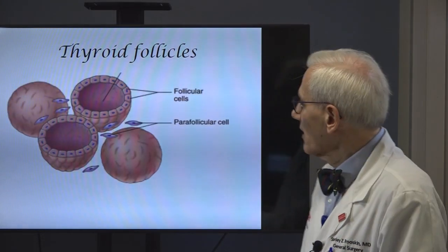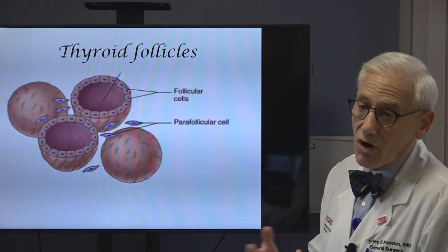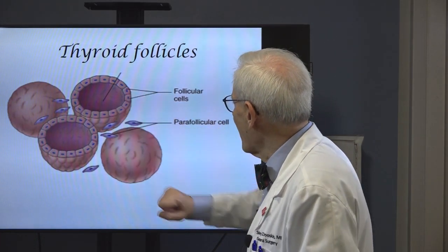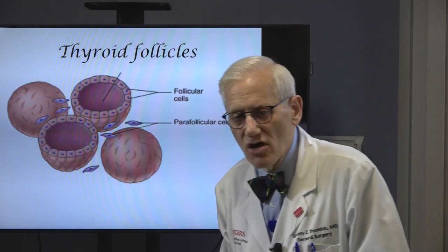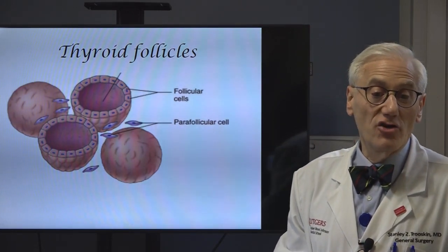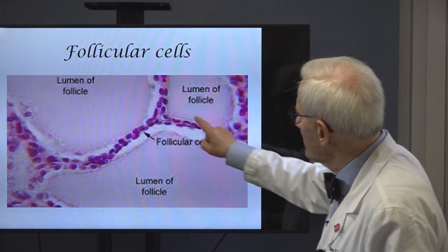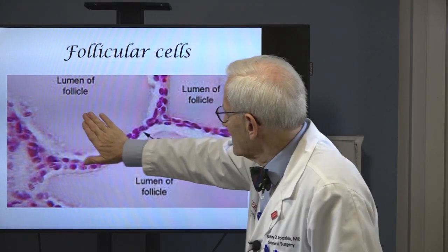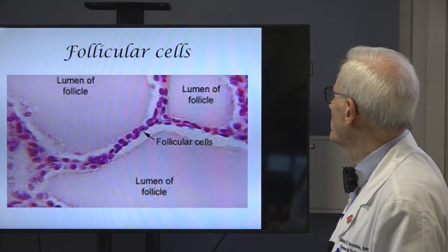Here's an illustration of a follicle. In three dimensions, it's going to look like a marble. You have the follicular cells on the outside, colloid in the middle, and there are other cells. The parafollicular cells are a combination of hormone producer and nerve cell. Under the microscope you see the follicular cells on the outside, the colloid on the inside. The cytoplasm stains pink and the DNA usually stains a darker blue.